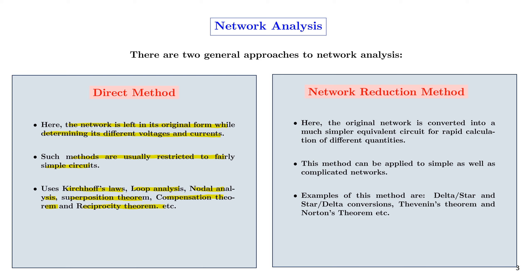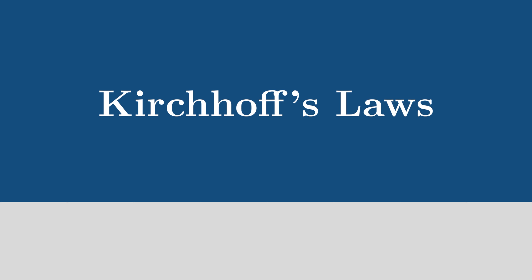In the network reduction method, the original network is converted into a much simpler equivalent circuit for the rapid calculation of different quantities. This method can be applied both to simple as well as complicated networks. Examples include the delta-star and star-delta conversions, Thevenin's theorem, Norton's theorem, etc. In the following sessions, we'll deal with these theorems in detail. We'll begin our study with Kirchhoff's laws.